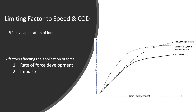Improving strength capacity happens through, firstly, strength training, but primarily through explosive and dynamic strength training, also known as power-based training. The fastest force production comes from power movements, where you have the pre-stretch followed by a fast concentric phase.